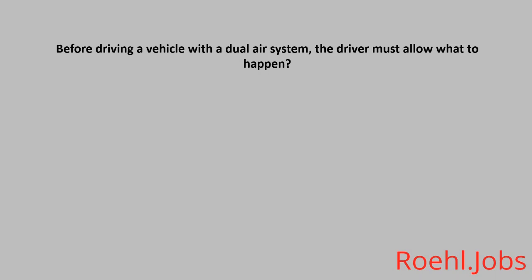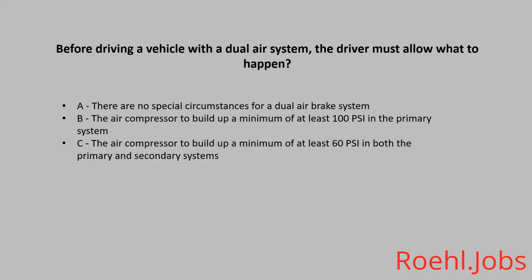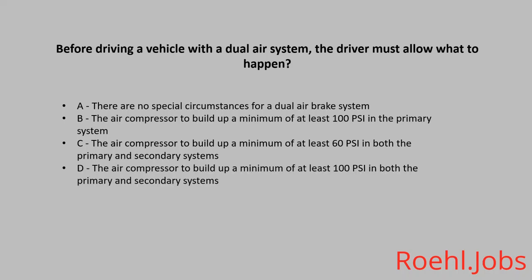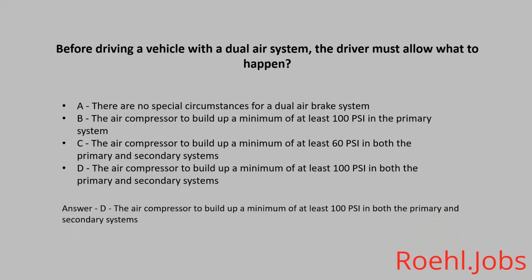Before driving a vehicle with a dual air system, the driver must allow what to happen? A. There are no special circumstances for a dual air brake system. B. The air compressor to build up a minimum of at least 100 PSI in the primary system. The answer: D. The air compressor to build up a minimum of at least 100 PSI in both the primary and secondary systems.